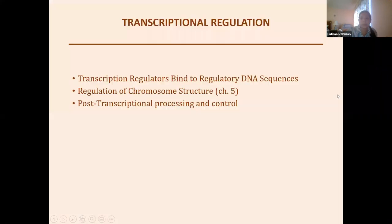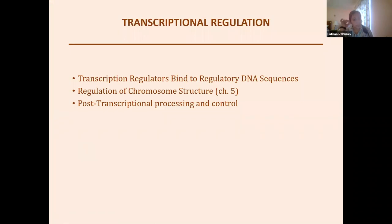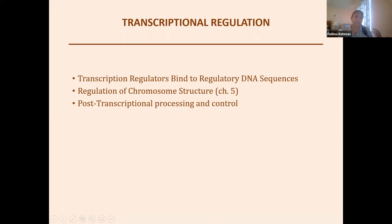We'll go through these several different processes and look at how each is controlled at a general level inside the body. The first is transcriptional regulation — this is where the last part of chapter 5 comes in. We'll look at regulatory sequences within the genome that proteins and regulators can bind to in order to either activate or repress gene expression, and how chromosome structure is regulated through various parts of the cell cycle.